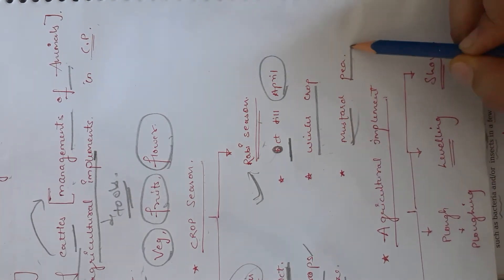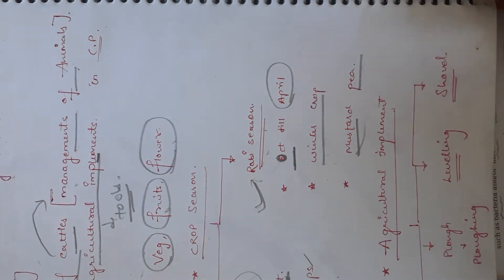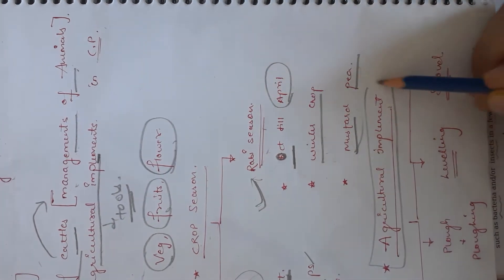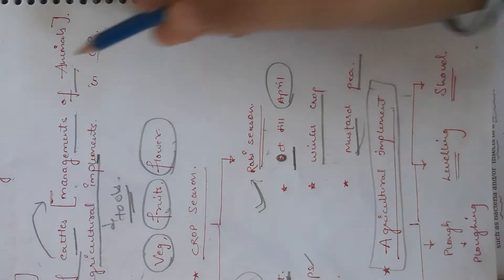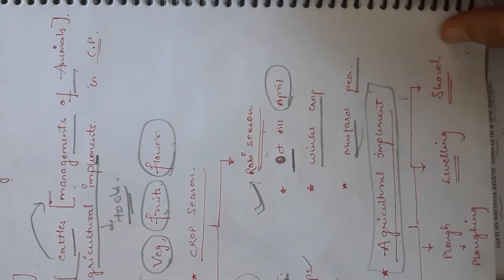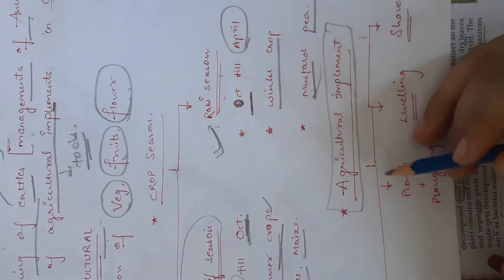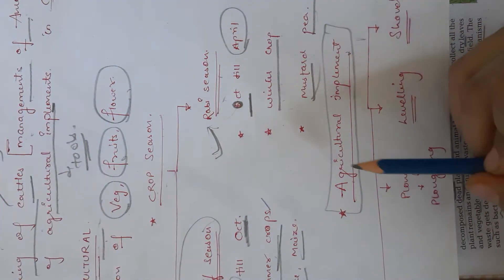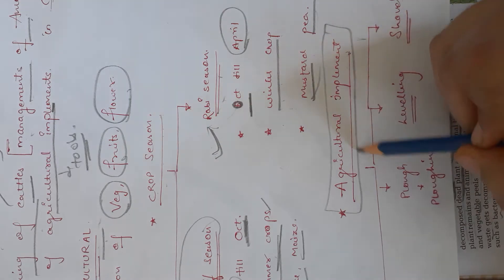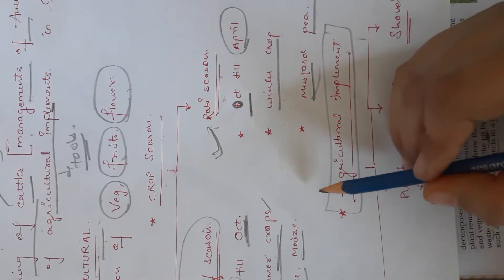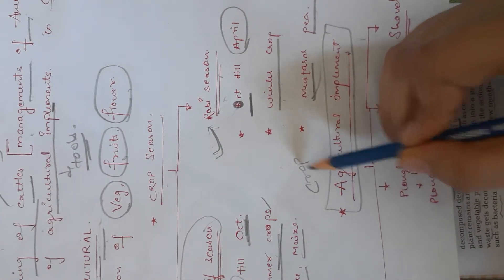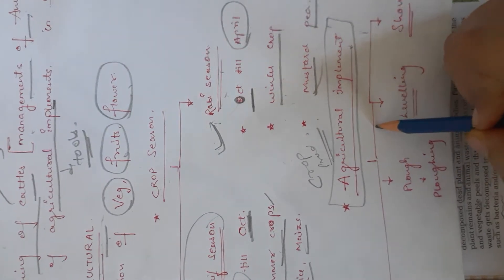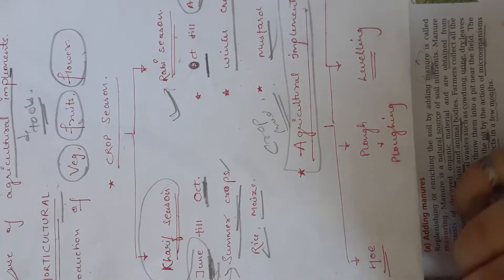What type of crops come in Rabi season? Mustard, pea, and many more. Then we discuss agricultural implements. I am just revising you in a short way so you can easily memorize it. Agricultural implements are the tools which are used in crop production.